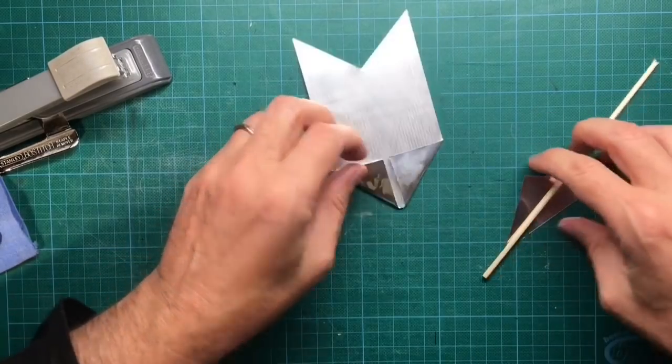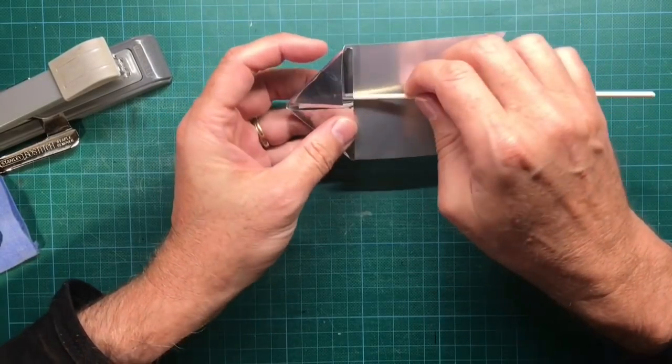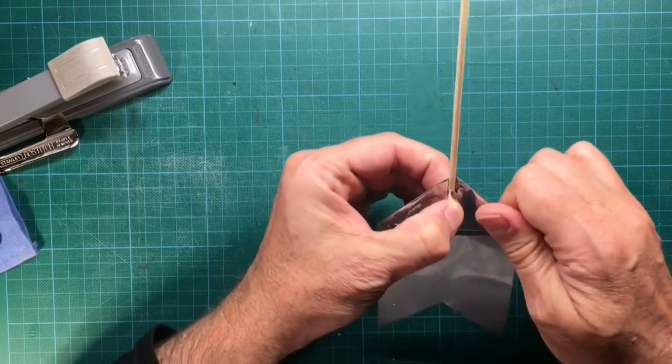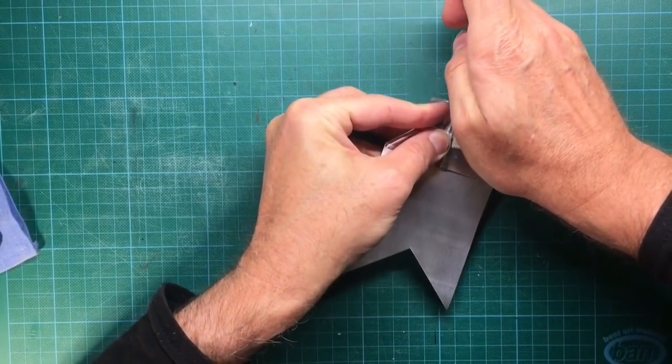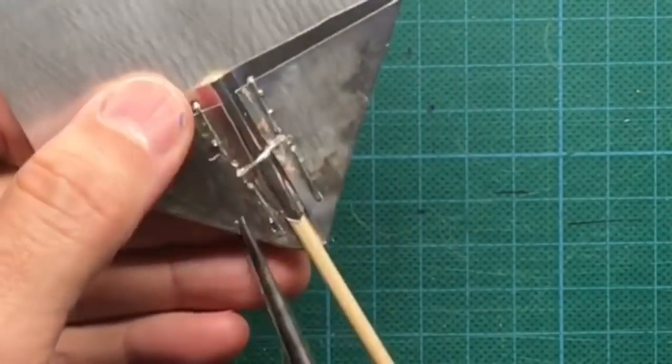Insert the aluminum arrow into the fin. Then enter the grill stick and fix it with the stapler. You can use pliers to tighten the staples.